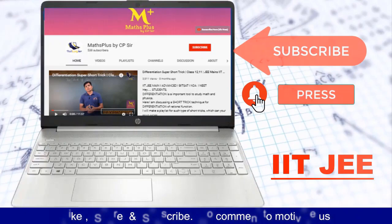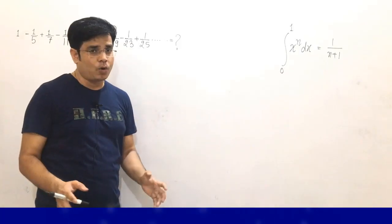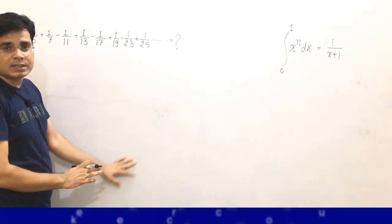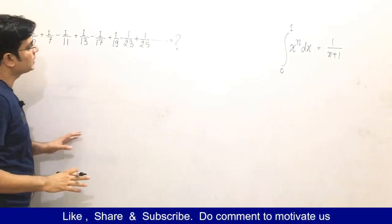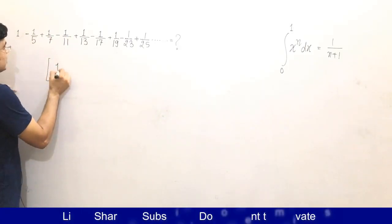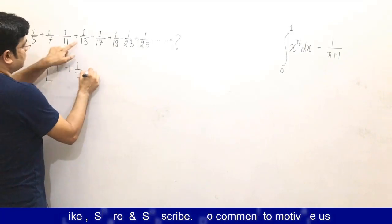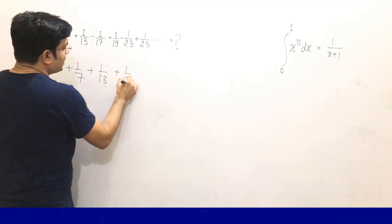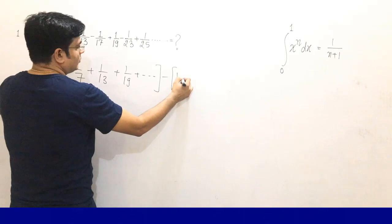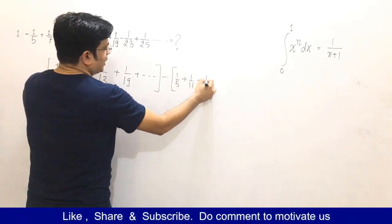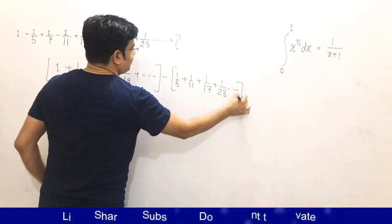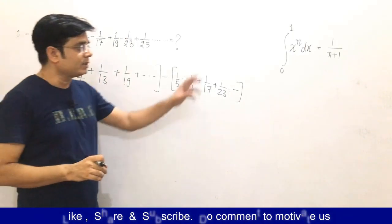Now let's find the way to simplify the sum. First, observe that there are two types of terms — some positive and some negative. Collecting the positive terms: 1 + 1/7 + 1/13 + 1/19 + ... and the negative terms in another bracket: 1/5 + 1/11 + 1/17 + 1/23 + ... and so on.